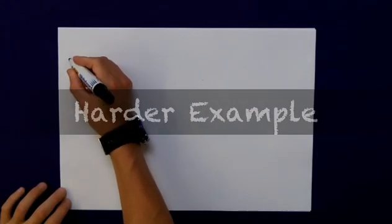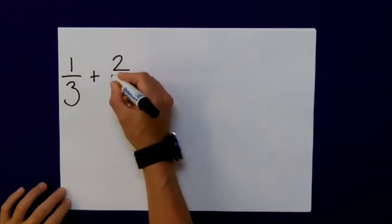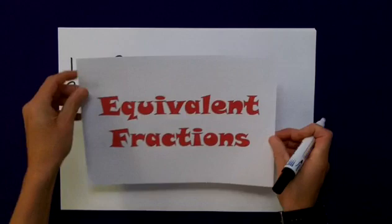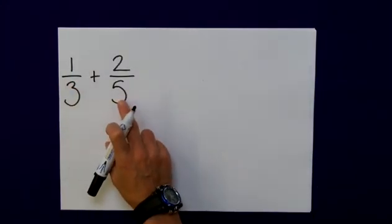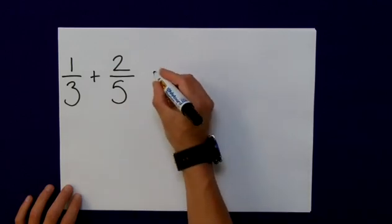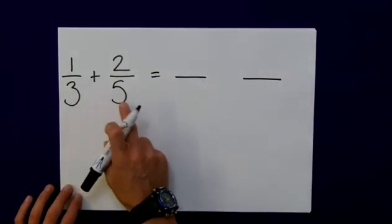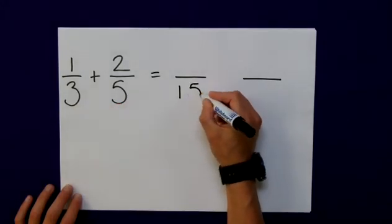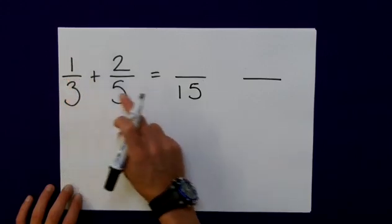Let's try and apply this to a more complicated example of, say, 1 third added to 2 fifths. I need to use my knowledge of equivalent fractions to change both of these so they have the same denominator. And one of the easiest ways to find what we call a common denominator is to multiply these two together. 3 times 5 is 15.